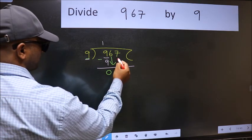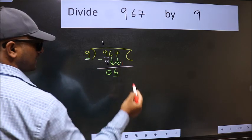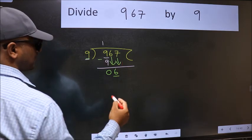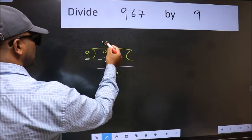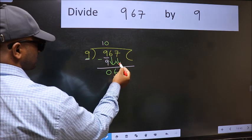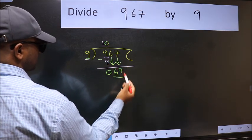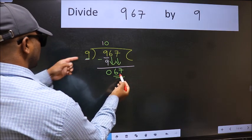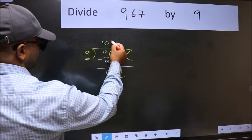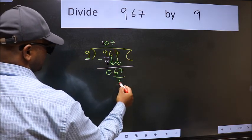The rule to bring down the second number is we should put zero here, then only we can bring this number down. Now 67. A number close to 67 in nine table is nine sevens, 63.